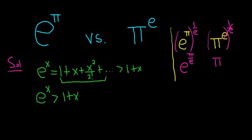Now we need to somehow use this to compare e^π and π^e. And we talked about looking at e^(π/e). So if we do that, what happens is we get the following. We replace x with π/e. And this is greater than 1 + π/e.